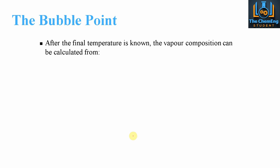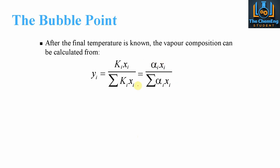After the final temperature is known, the vapour composition can be calculated. We can substitute using either the individual K value for each component or the relative volatility for each component. For example, if we wanted to know YA, we would need to find KA using the formula from the previous slide — i.e. by assuming different temperatures — and we would need to know the liquid composition for A. Then we take the summation of the remaining compounds, and the same principle applies for relative volatilities.